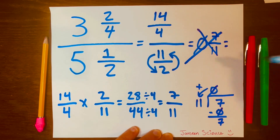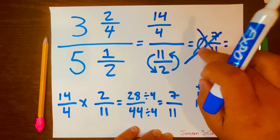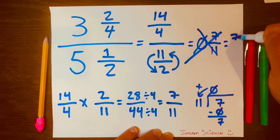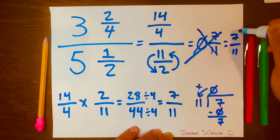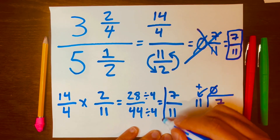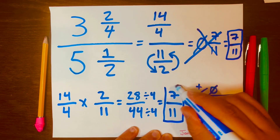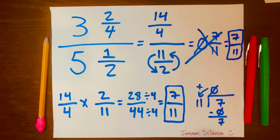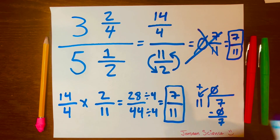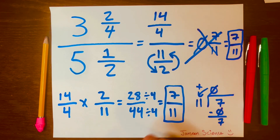We can't use zero as the whole number because we need a number greater than one. So the final answer is seven over eleven. If you have not subscribed to the channel, please subscribe to support, and thank you for watching!